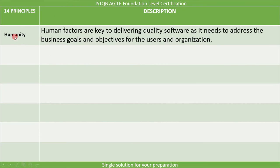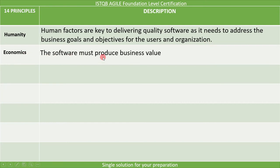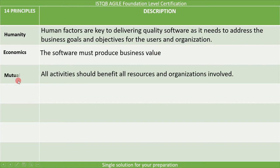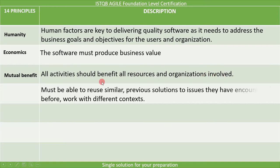First is humanity: human factors are key to delivering quality software as it needs to address the business goals and objectives for the users and organization. Second is economics: the software must produce business value. Third is mutual benefit: all activities should benefit all resources and organizations involved. Next is self-similarity: we must be able to reuse similar previous solutions to issues encountered before, albeit with different contexts.